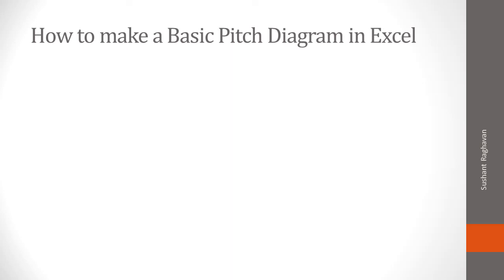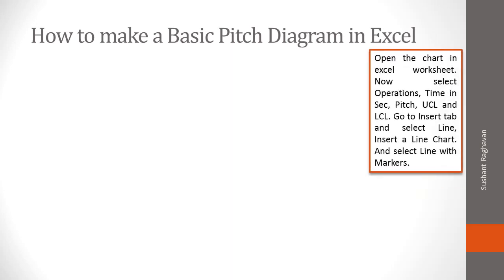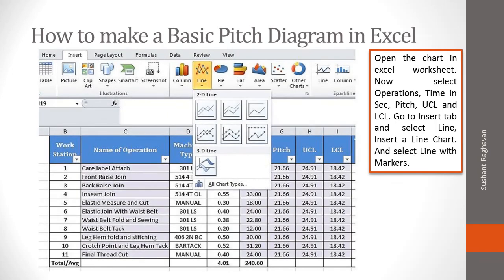To make a basic pitch diagram in Excel: open the chart in an Excel worksheet, then select operations, time in seconds, pitch, upper control limit, and lower control limit. Go to the Insert tab and select Line, then insert a line and select Line with Markers.